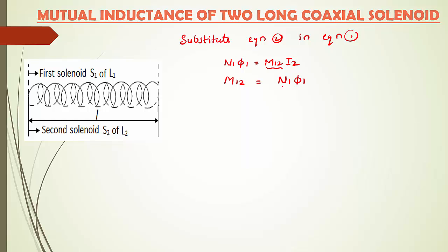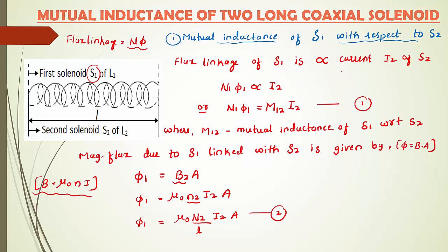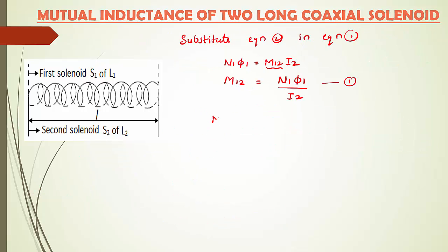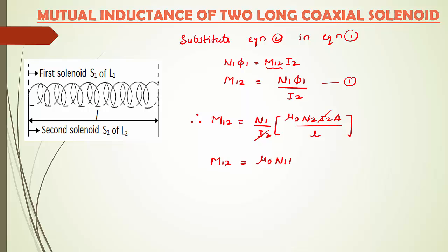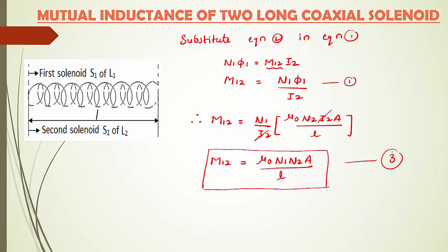Substituting the value of φ1 from equation 2 (φ1 = μ₀n2I2A / L) into the expression for M12: M12 = N1 / I2 × (μ₀n2I2A / L). Simplifying, we get M12 = μ₀N1n2A / L. Let us take this as equation number 3.